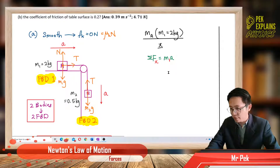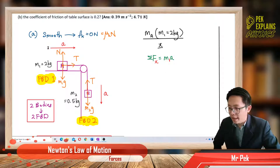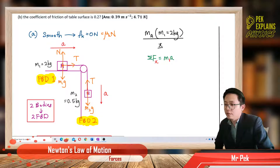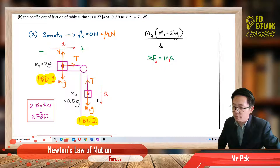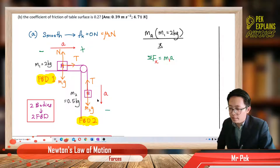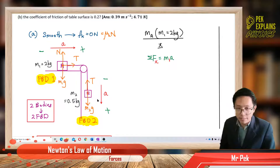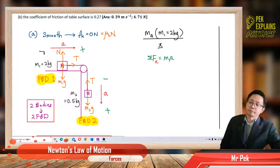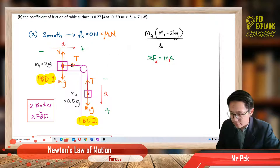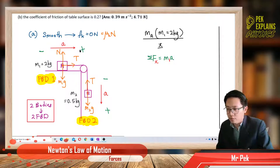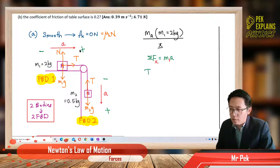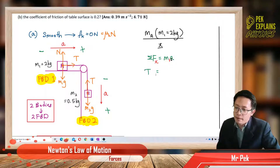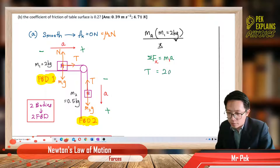Now we put the sign first before calculation. For the X component, acceleration is to the right, so direction to the right is positive, direction to the left is negative. For mass B, it accelerates downward, so downward is positive and upward is negative. For mass A's X component, tension follows acceleration, so it is positive. We only have tension, so: tension = 2A. That is equation 1 for mass A (2kg).